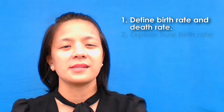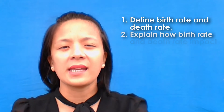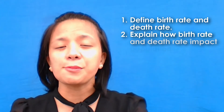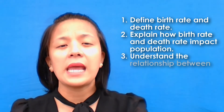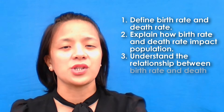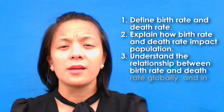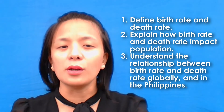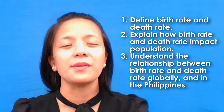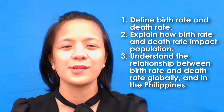In doing this activity, you will have these learning objectives. First, define birth rate and death rate. Second, explain how birth rate and death rates impact population. Third, describe why the global death rate has dropped in recent history.